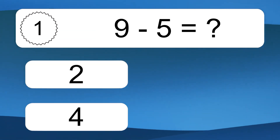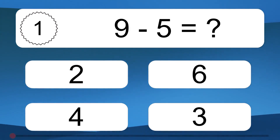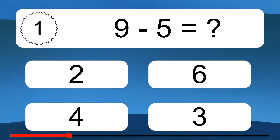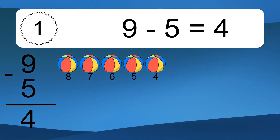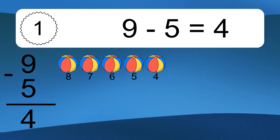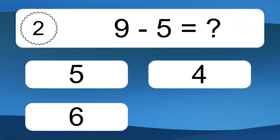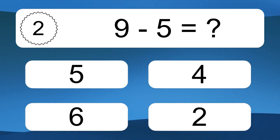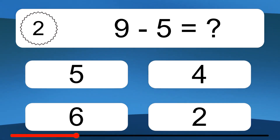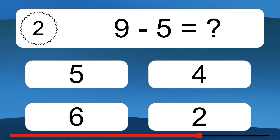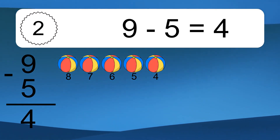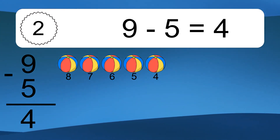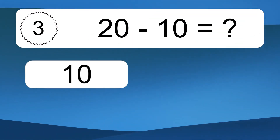9 minus 5 equals what? 9 minus 5 equals 4. Let's count it: 8, 7, 6, 5, 4.